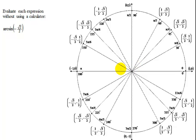So that means I need to use my unit circle. Often the easiest way to evaluate these is to set your expression equal to a variable. I'm going to pick theta.